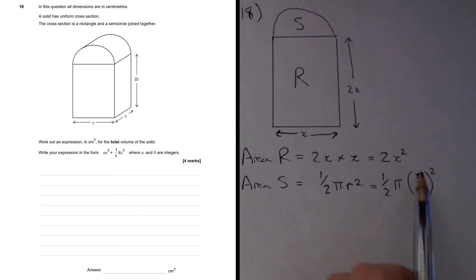Remember, the whole radius x over 2 is squared. And if we simplify this, we're going to get that half is going to square to a quarter. Times by another half gives us an eighth. Then we've got pi x squared.